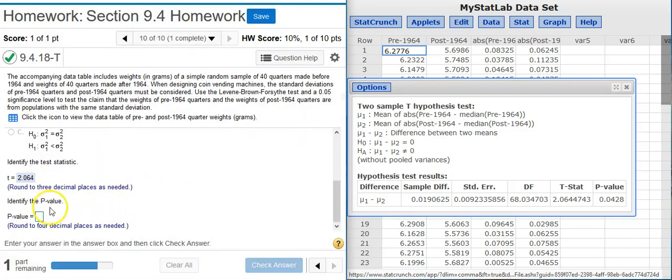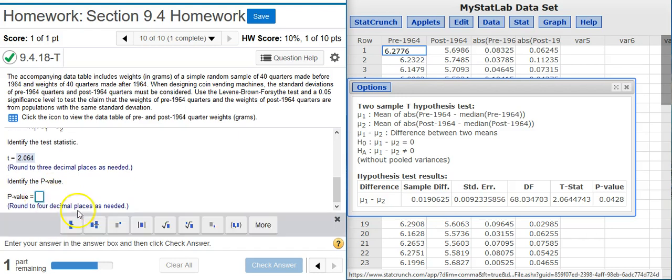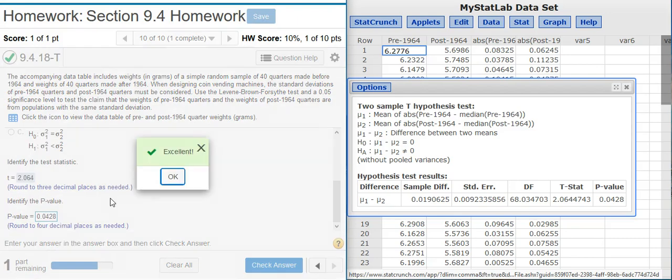And now the next part asks for the p-value, which of course, is always right next door to the test statistic, the last value there in that results window table. And I'm asked to round to four decimal places. Conveniently, that's the number I have there in the results window. Excellent!